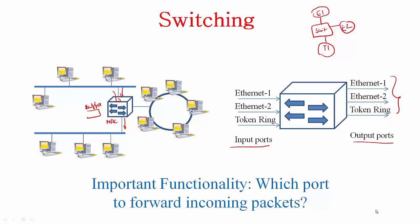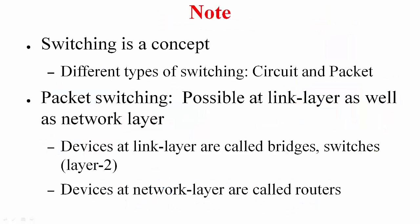A few points to note: switching is a concept and there are different types of switching - circuit and packet. Since it is a concept, you can find its use at different layers, so it is possible to do switching at the link layer as well as the network layer. We will focus predominantly on packet switching since this is the core of the internet. The devices that employ packet switching at the link layer are called bridges or switches - layer 2 switches typically - and when you employ switching at the network layer, the devices that do that are called routers.